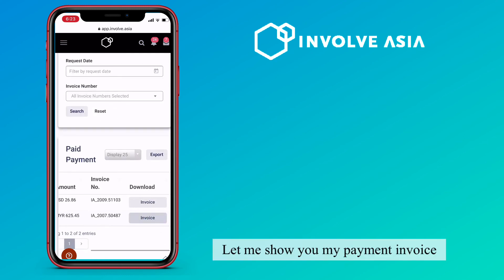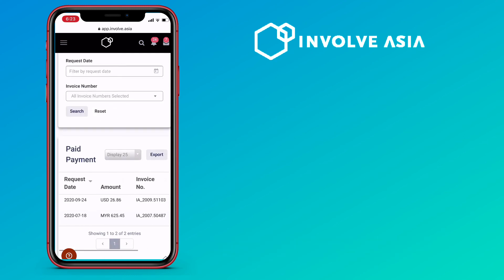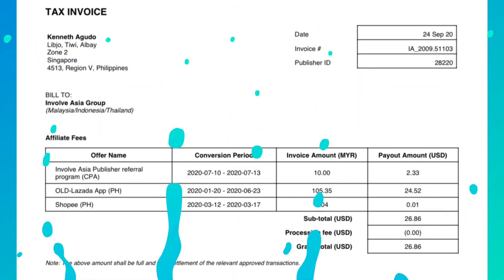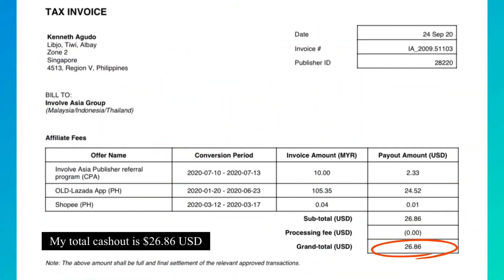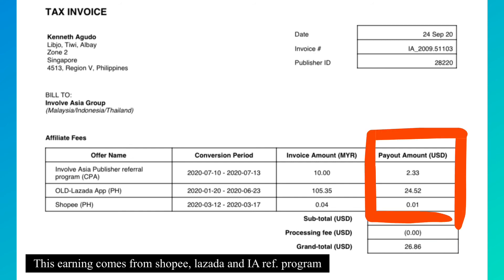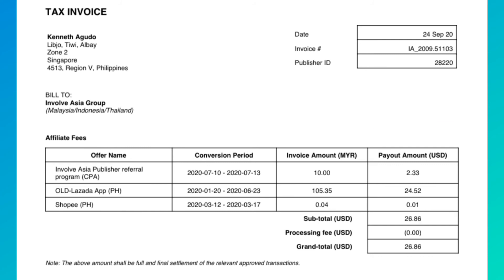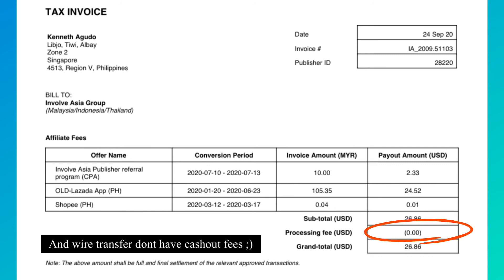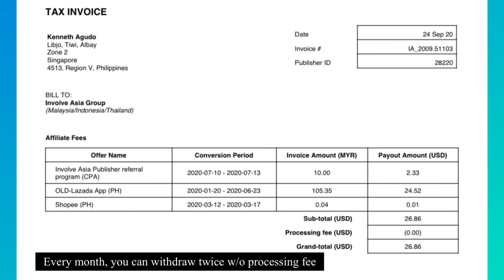Let me show you my payment invoice. My total cashout is $26.86. This earnings comes from Shopee, Lazada, and InvolveAsia referral program. Wire transfer doesn't have cashout fees. Every month, you can withdraw twice without a processing fee.